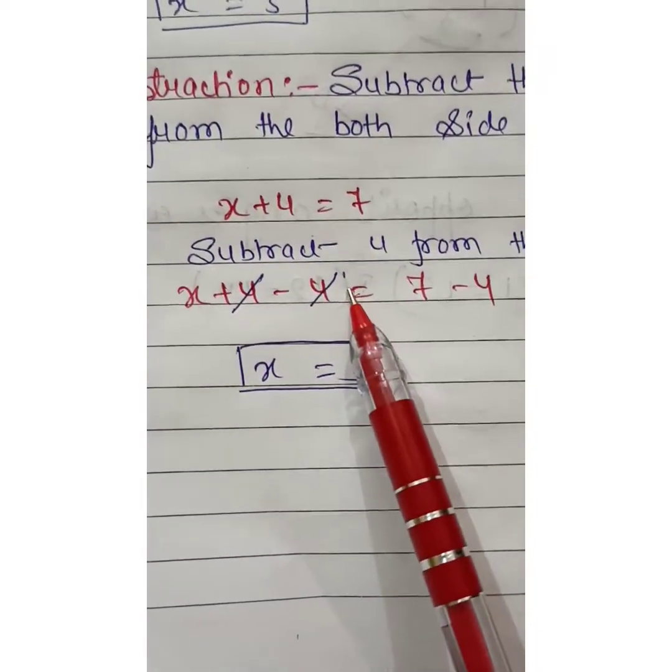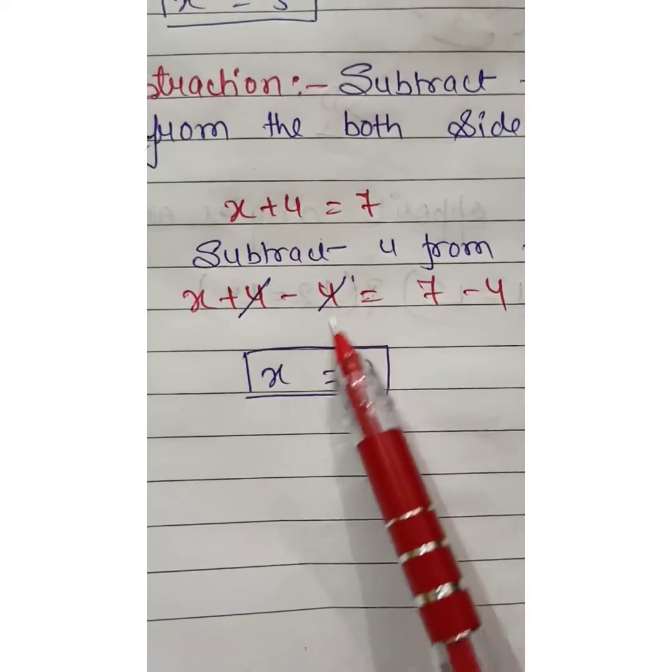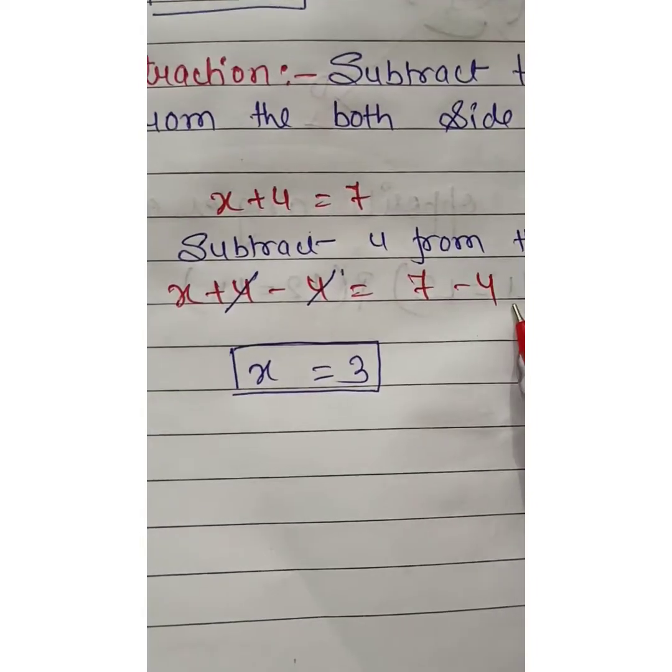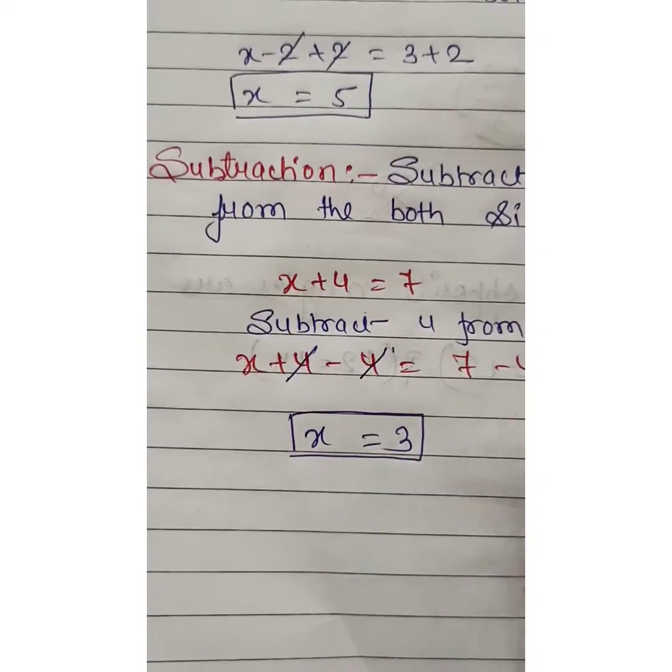x plus 4 minus 4, and 7 minus 4. Plus 4 minus 4 cancels out, and 7 minus 4 becomes 3. So x equals 3 is the solution of the given equation.